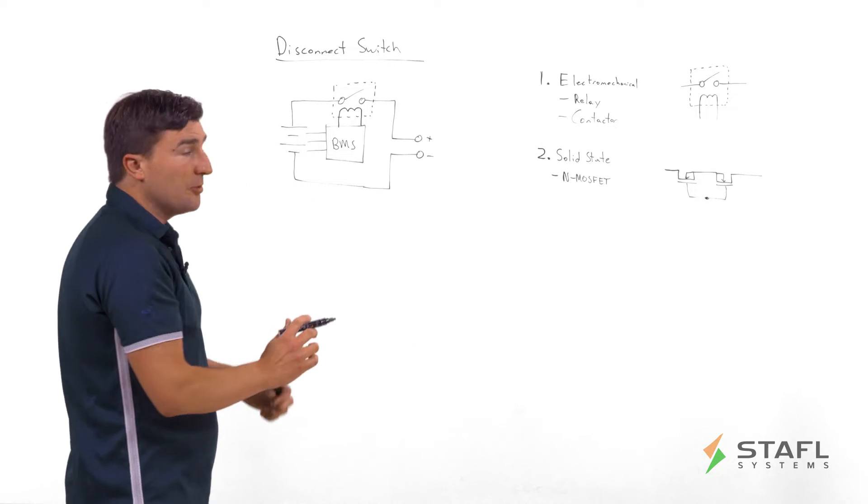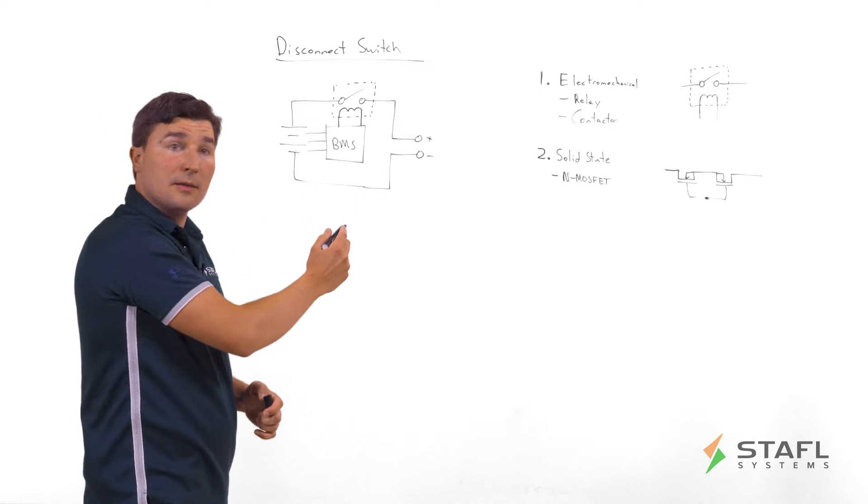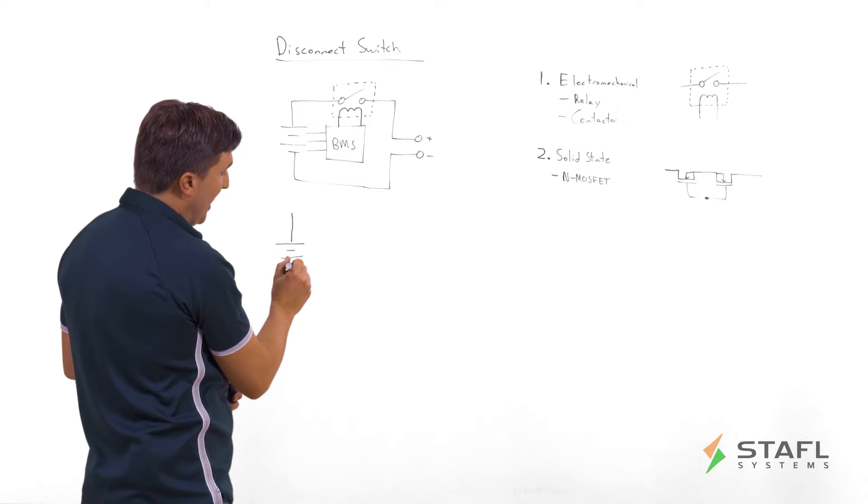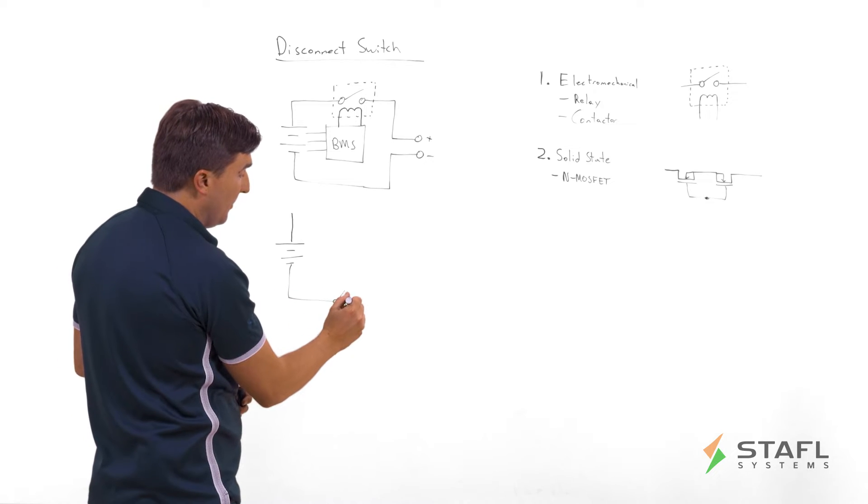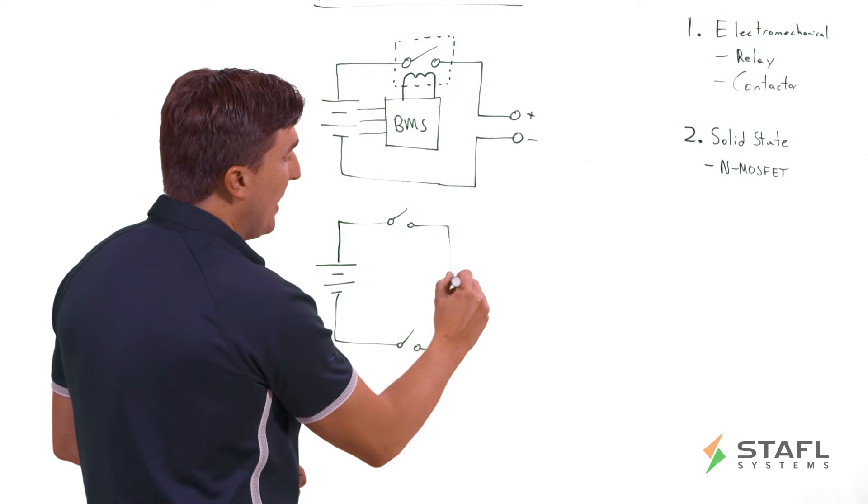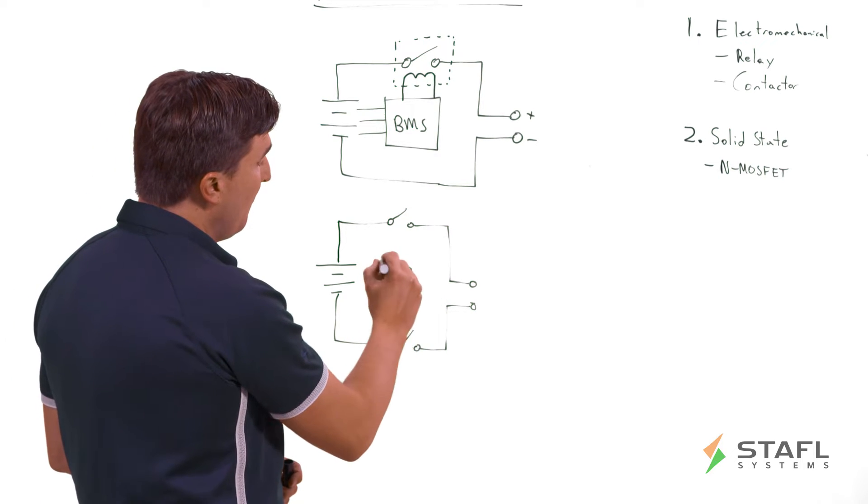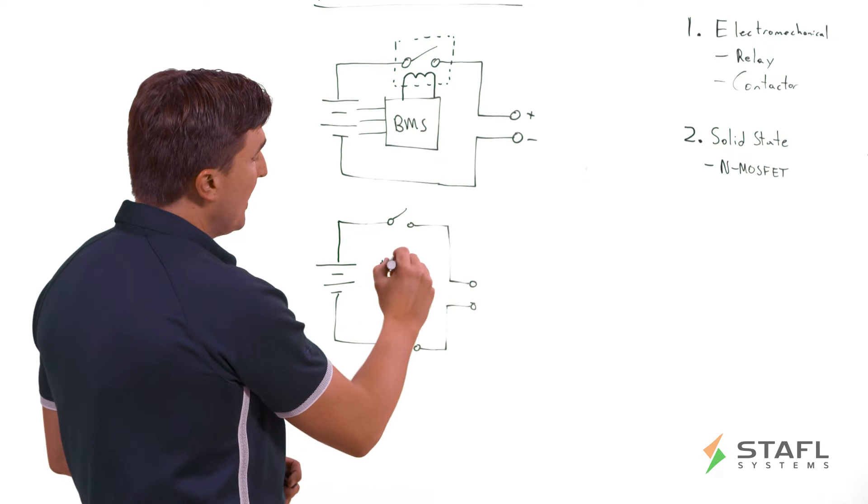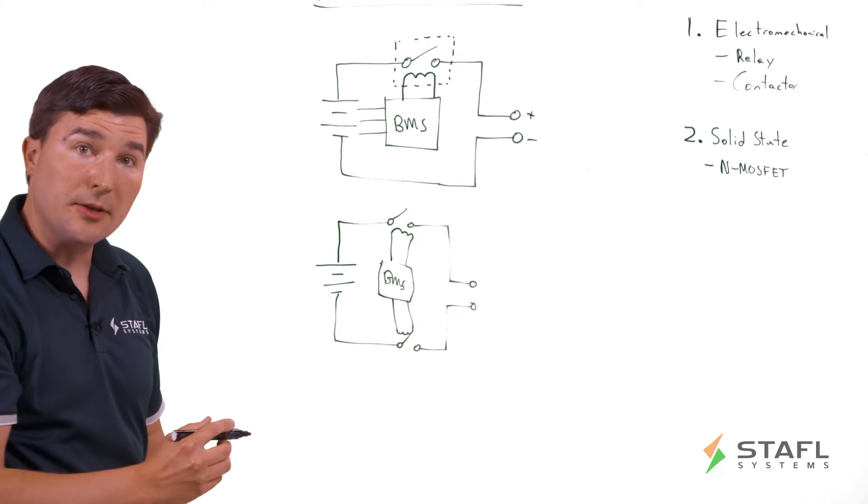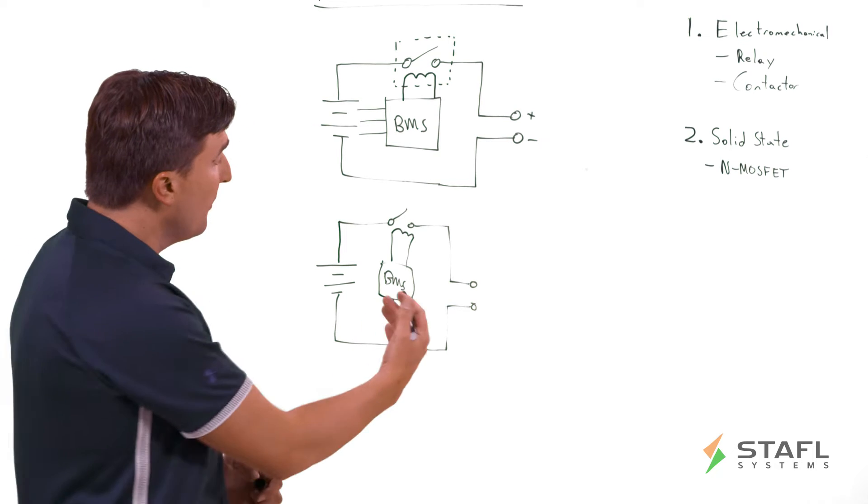The solid state switch would typically have two source coupled MOSFETs configured in this manner with a gate drive that can determine whether current is allowed to flow or if it is blocked in both directions. Going back to the original diagram, this battery pack has only a top side disconnect switch. But in many applications, particularly high voltage applications such as an electric vehicle, it's actually important to have both top and bottom side disconnect switch capability. This is important because it allows the BMS to have some redundancy in disconnecting itself in case there's a failure in one of the switches, and it also creates an additional factor of safety for any sort of shock hazard.